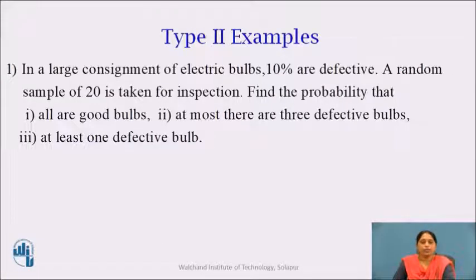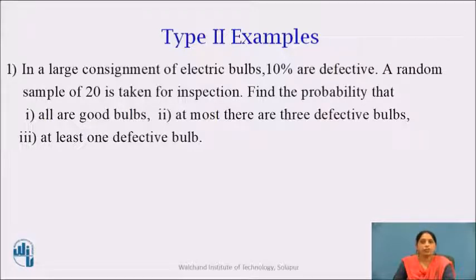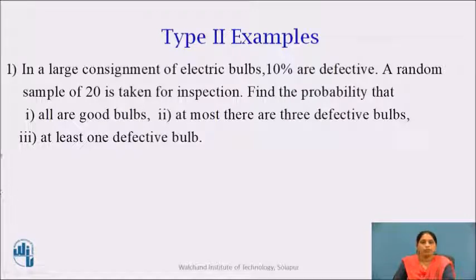Now, in this video we are going to see the Type 2 examples. In the previous video, we saw the Type 1 examples, which are the examples defined for constants of the distribution. Now in the Type 2 examples, we are going to find out the probability using binomial distribution.